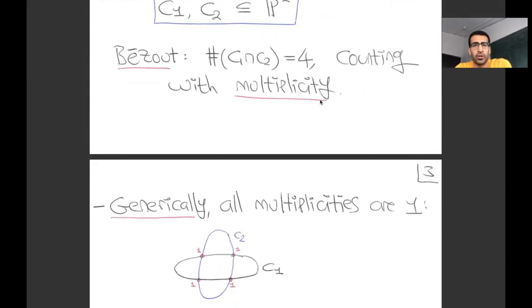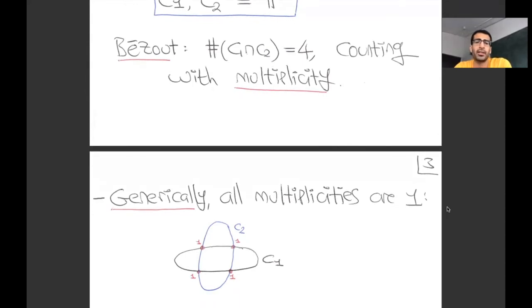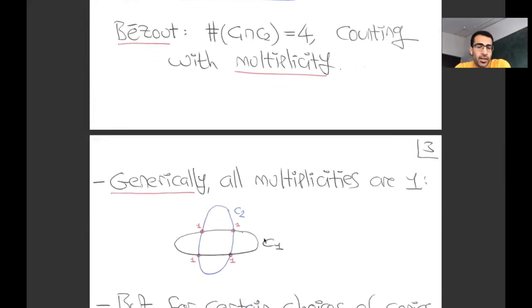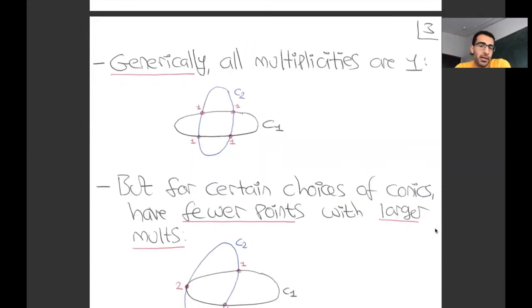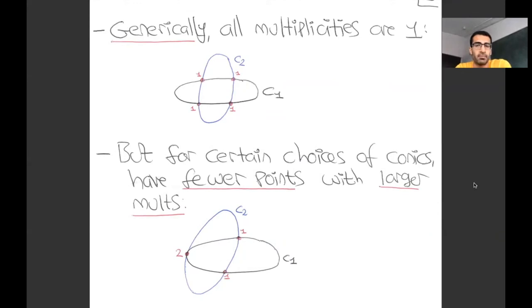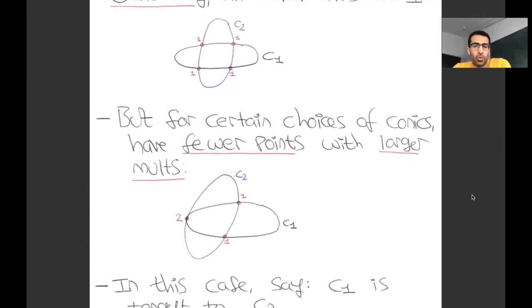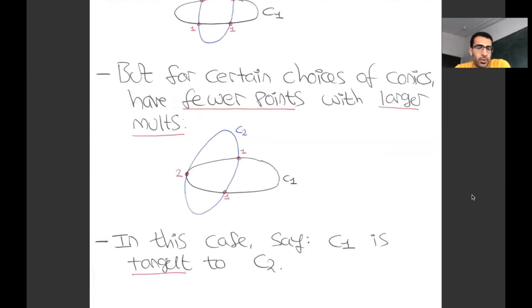For certain special choices of C1 or C2, this might not be the case. You can imagine sliding C1 over so that for certain special choices you have fewer intersection points. By Bezout's theorem they're going to have to have larger multiplicities. In this case, I would say that C1 and C2 are tangent to each other—they're tangent at this point.